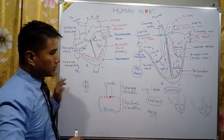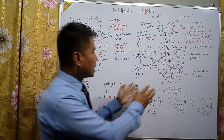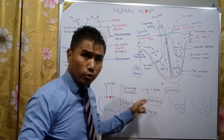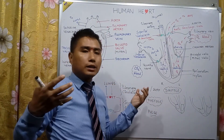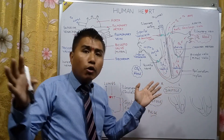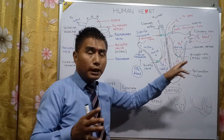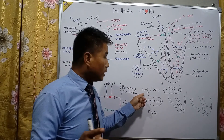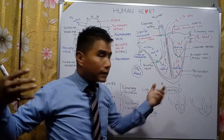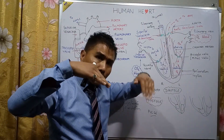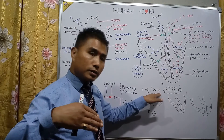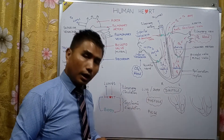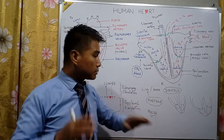The contraction of the heart is known as systole, and the relaxation of the heart is known as diastole. When the heart contracts (systole), the tricuspid and bicuspid valves close and the sound 'lub' is produced. When the ventricle relaxes (diastole), the semi-lunar valves close and the sound 'dub' is produced.